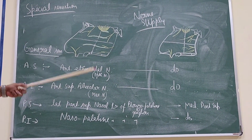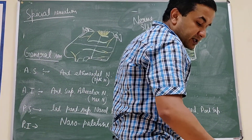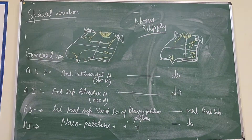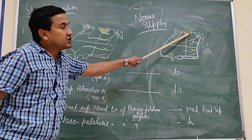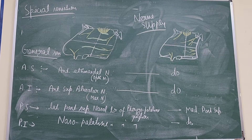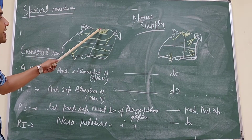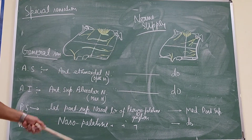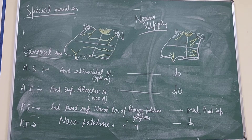First of all, the special sensation — that means olfactory sensation. It is carried by the olfactory epithelium. These olfactory receptors are present and the olfactory nerves perforate the cribriform plate, enter the cranial cavity, and join the olfactory bulb.